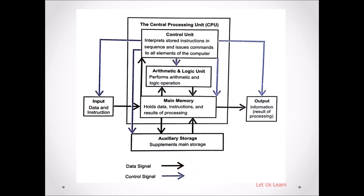To understand in detail, look at the picture here — this is the flowchart of your computer system. The first rectangle box is the input device, where you have the keyboard and you give your data. The second one is called the CPU — central processing unit — and the third one is the output device.